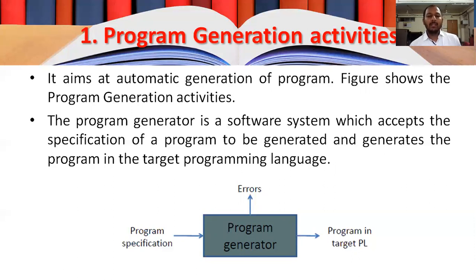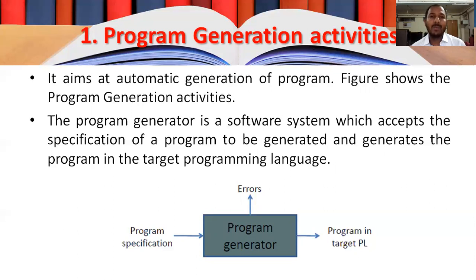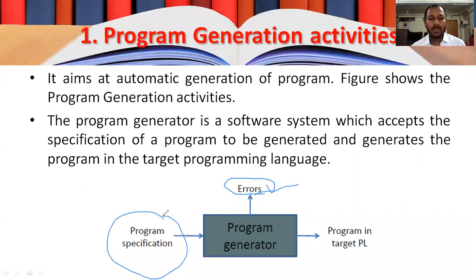The input for the program generator is a program specification. Whatever specification is given is taken by the program generator, and the program generator gives the output as a target program. If there are any errors in the program specification, these errors will be given out by the program generator. The program in the target programming language is the output.